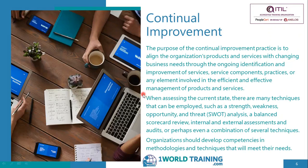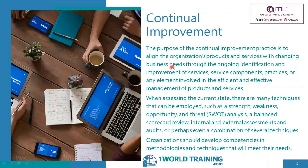To make an improvement, it is important to assess the current state — what is the current situation? Many methods can be used for that, such as SWOT analysis (strengths, weaknesses, opportunities, and threats), a balanced scorecard review, or certain meetings like internal and external assessments or audits, or even a combination of these techniques. Not all techniques should be used all the time, so organizations should develop competencies only in those methods that will meet their needs. There may also be techniques for improvement such as Lean, Agile, DevOps, and Six Sigma.